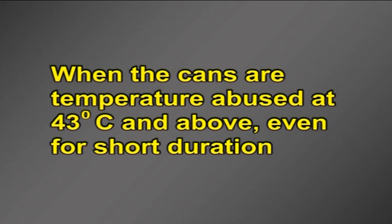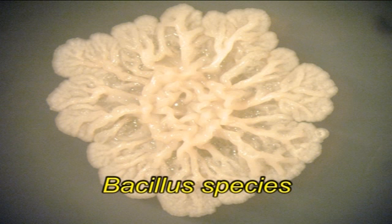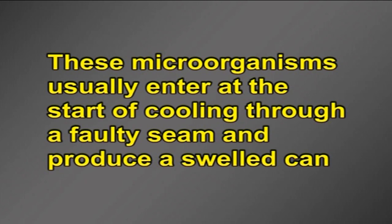Canned goods spoilage. Canning is a method of preserving food in which the food contents are processed and sealed in an airtight container, extending its shelf life. Thermophilic spore formers can cause some types of spoilage of low acid (high pH) foods such as corn, beans, and peas when the cans are temperature-abused at 43 degrees Celsius and above, even for short durations. Spoilage due to insufficient heating involves Clostridium and some Bacillus species. Spoilage due to container leakage can be caused by a variety of microorganisms that do not normally survive the heat treatment; these usually enter through a faulty seam and produce a swelled can.